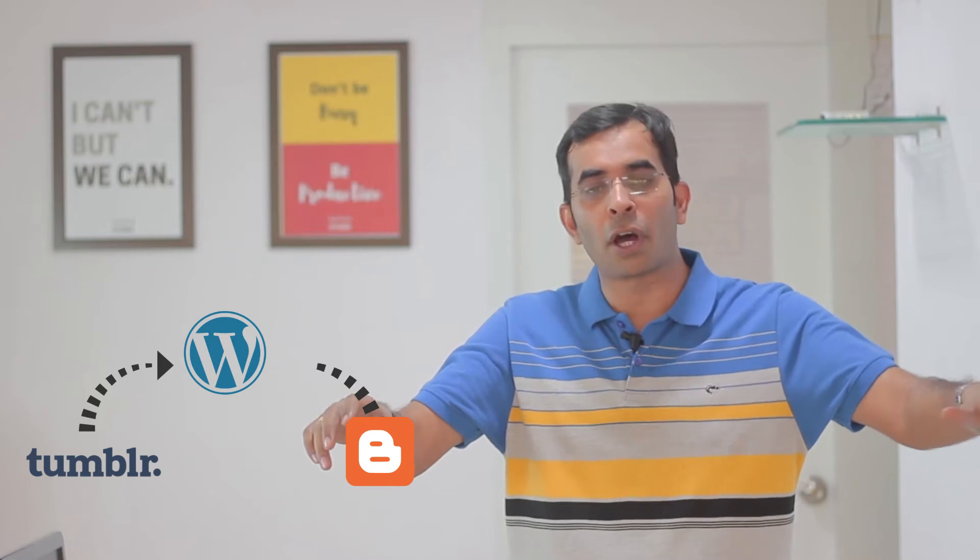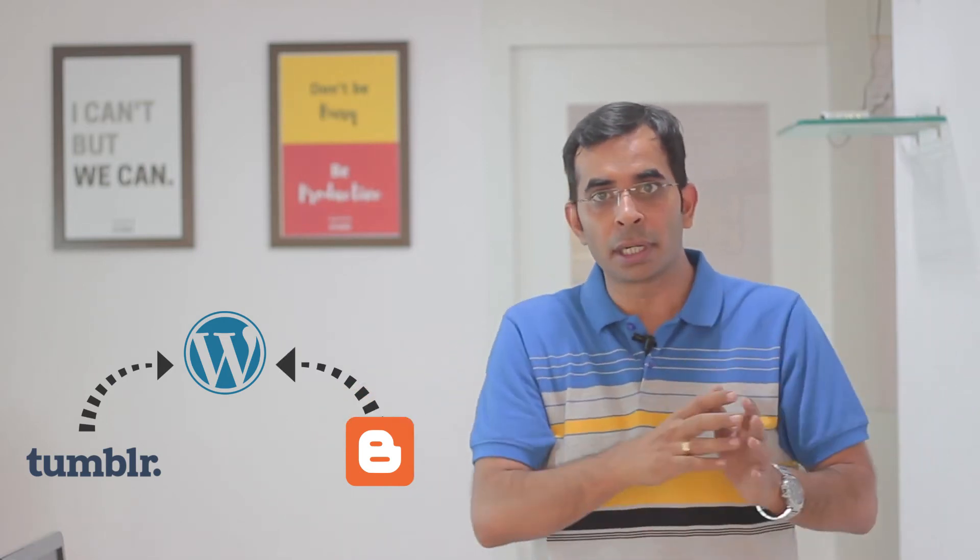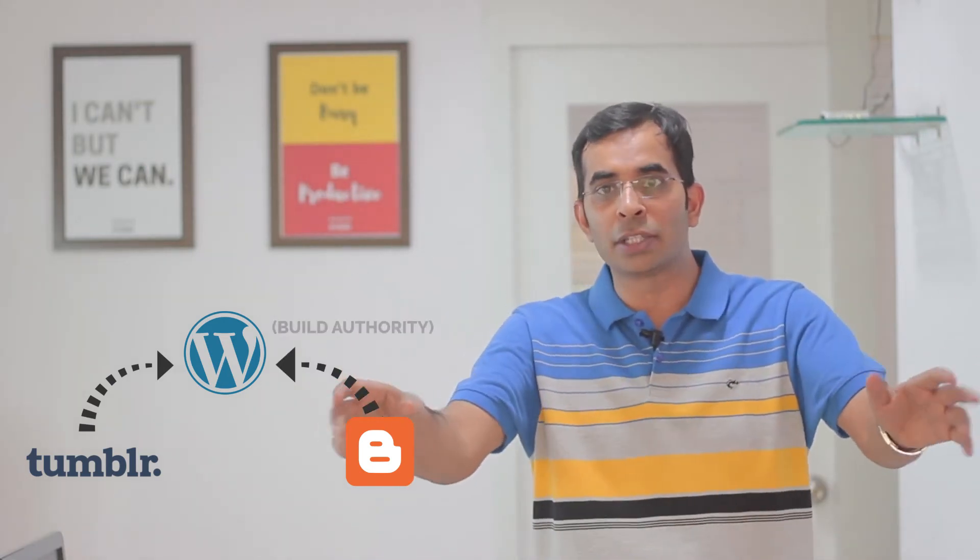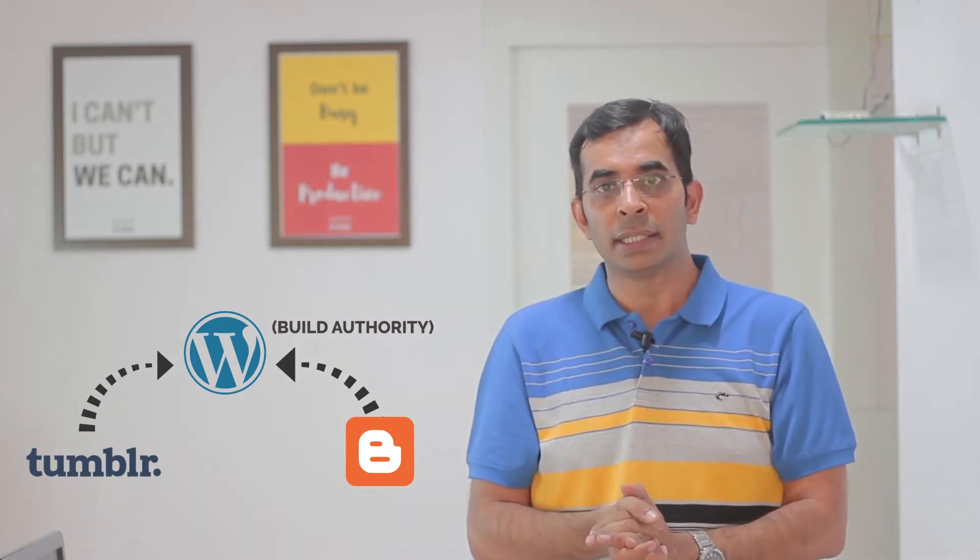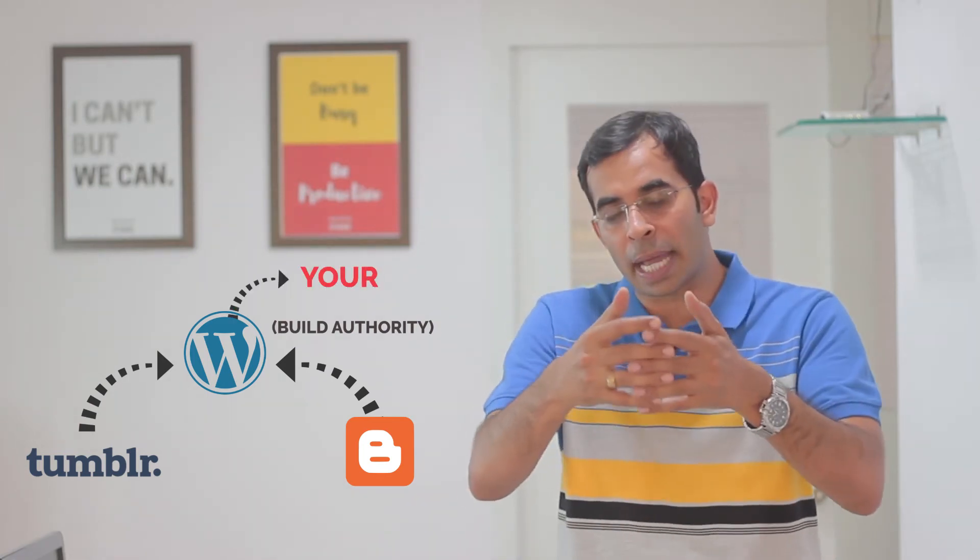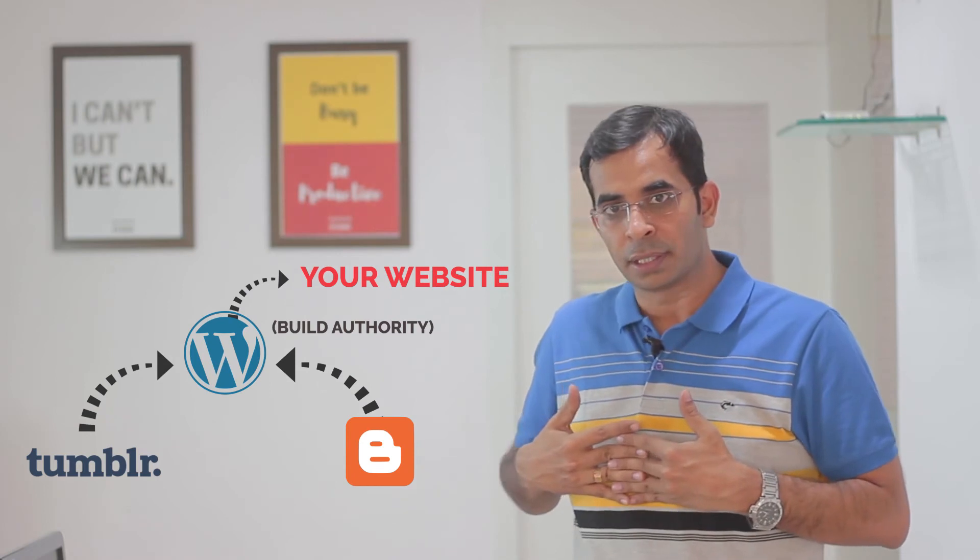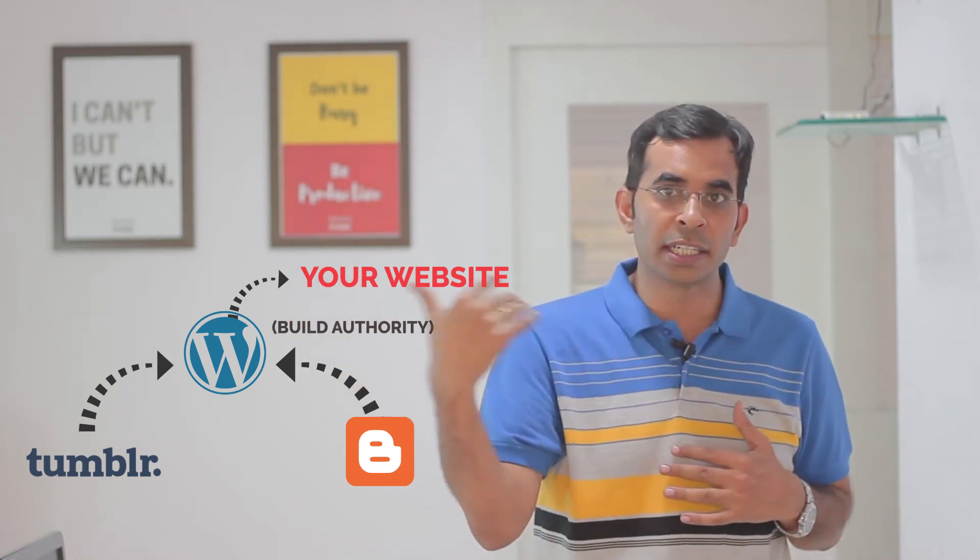From Blogspot and Tumblr, you give backlinks to the wordpress.com site. From the wordpress.com site, you are giving a backlink to a.com. So you are basically creating tiers.